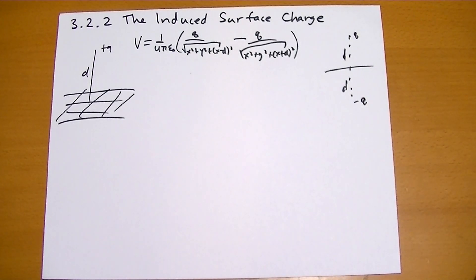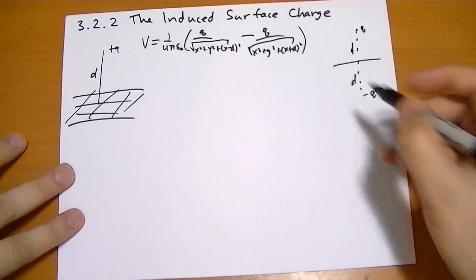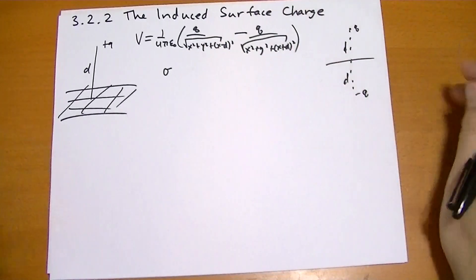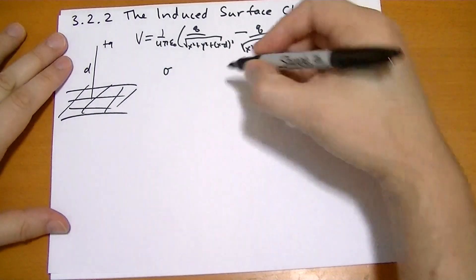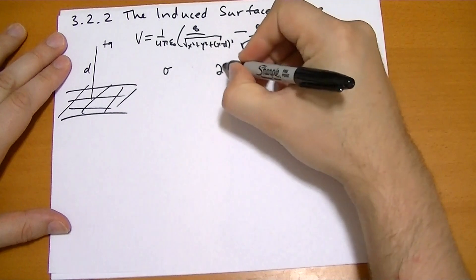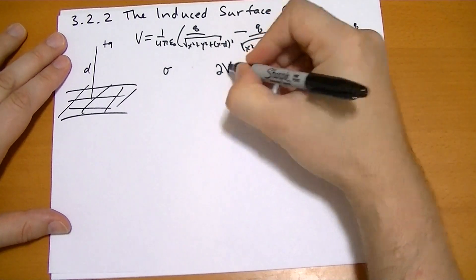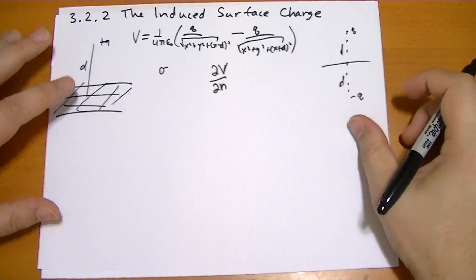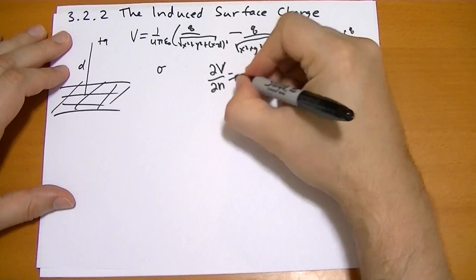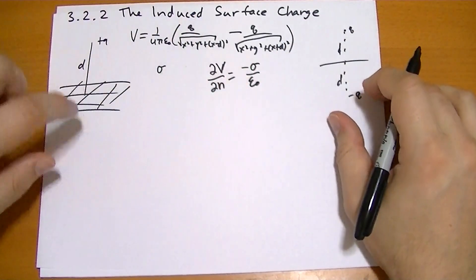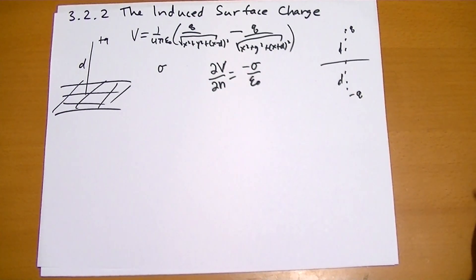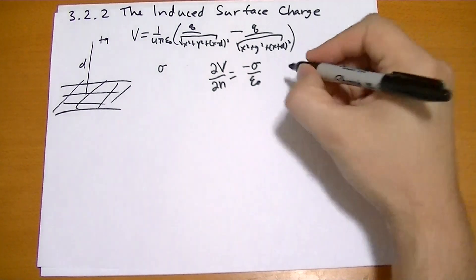Now that we have the potential, we can calculate sigma, the surface charge density on the plane. We have this equation that says the derivative of the potential over the normal of a conductor is equal to minus sigma over epsilon naught of the surface charge density on that conductor surface. That came from section 2.5.3.